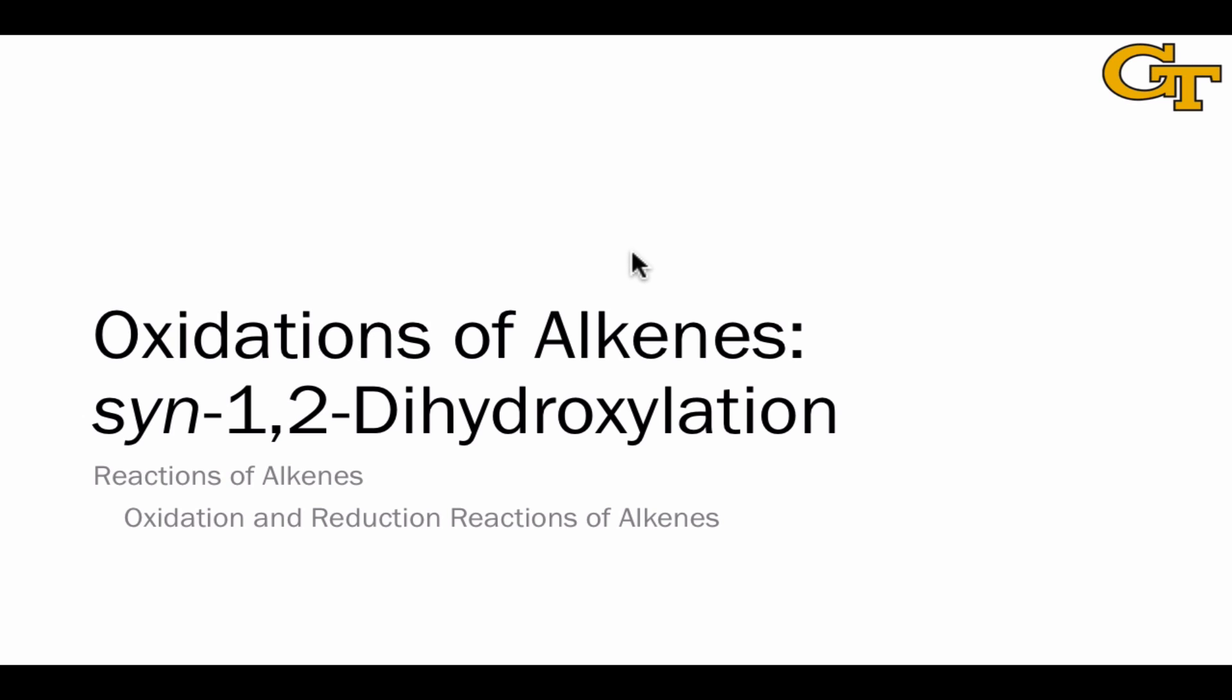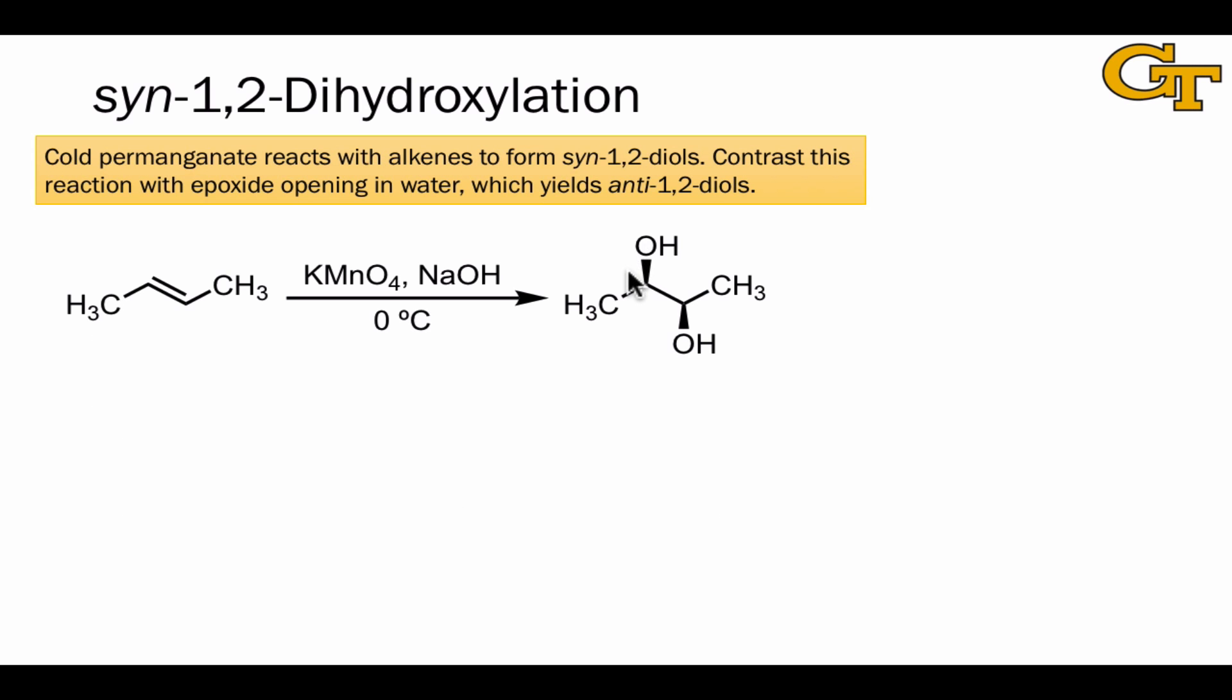The first example is 1,2-dihydroxylation, which occurs in a syn fashion. Potassium permanganate contains a highly oxidized form of manganese, and we can see this fairly easily if we draw a Lewis structure for the permanganate anion.